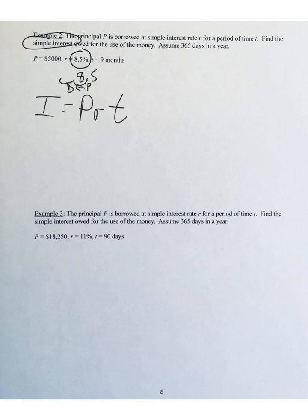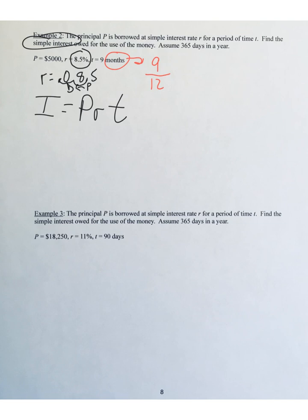First, check the interest rate R — it needs to be converted to a decimal. To get rid of the percent symbol, move the decimal point two hops to the left: 8.5% becomes .085, so R is .085. Second, check that time is in years. It says nine months, so to convert from months to years divide by 12: nine divided by 12. You don't have to reduce the fraction — just leave it as 9/12, meaning nine months is nine-twelfths of a year.